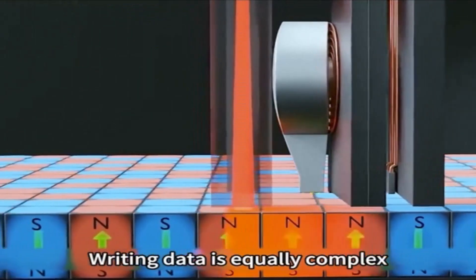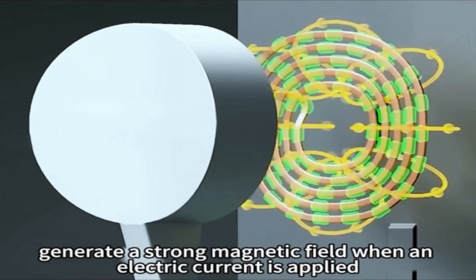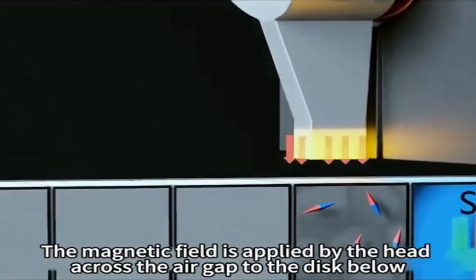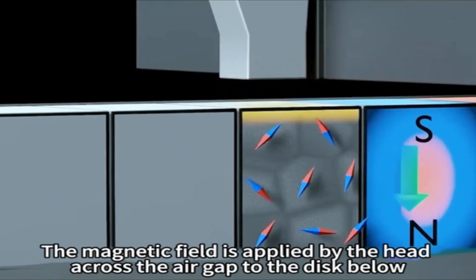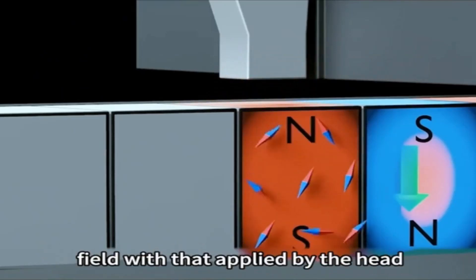Writing data is equally complex. The back of the write head is covered with coils that generate a strong magnetic field when an electric current is applied. The magnetic field is applied by the head across the air gap to the disk below, and these atoms are then forced to align the magnetic field with that applied by the head.